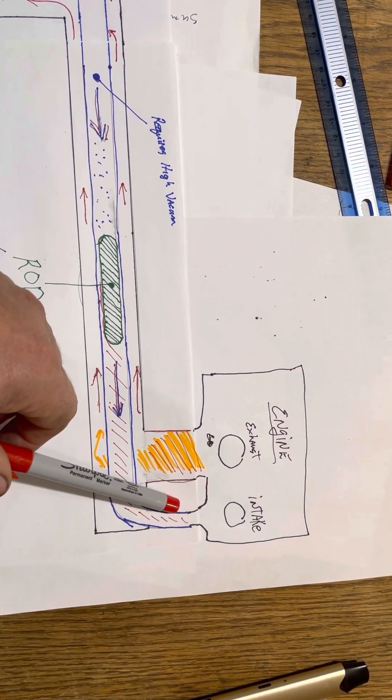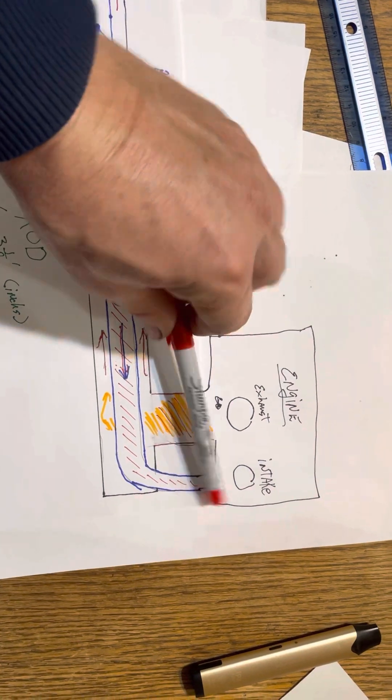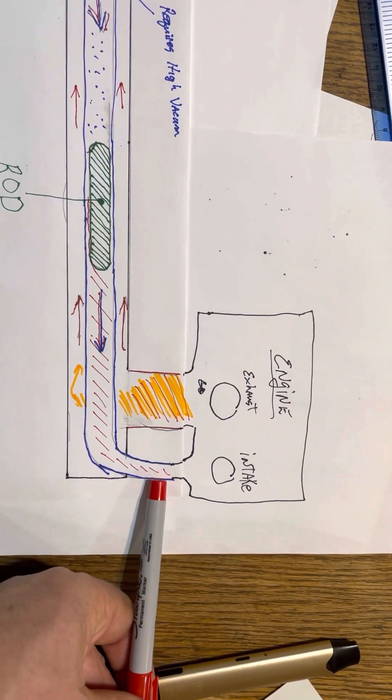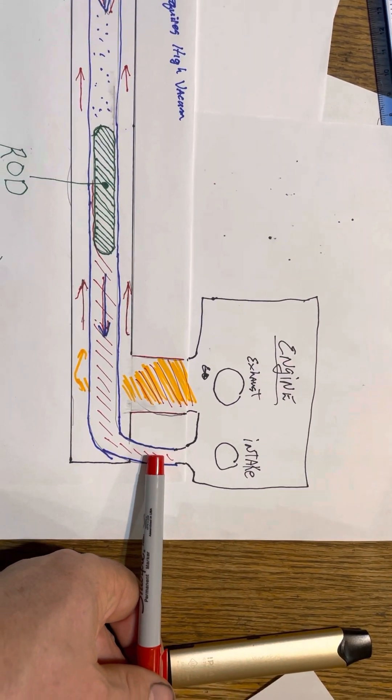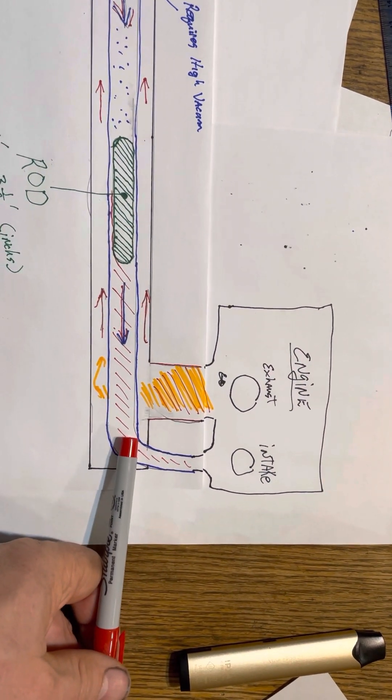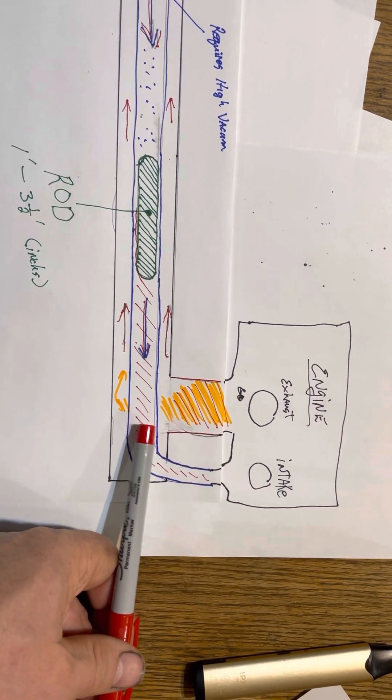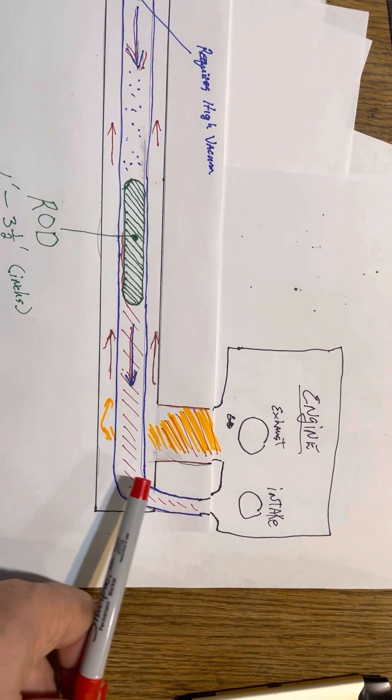There should be a valve here, like right there somewhere. And that valve, if it was half as big in diameter as your intake pipe, that'd be plenty big.